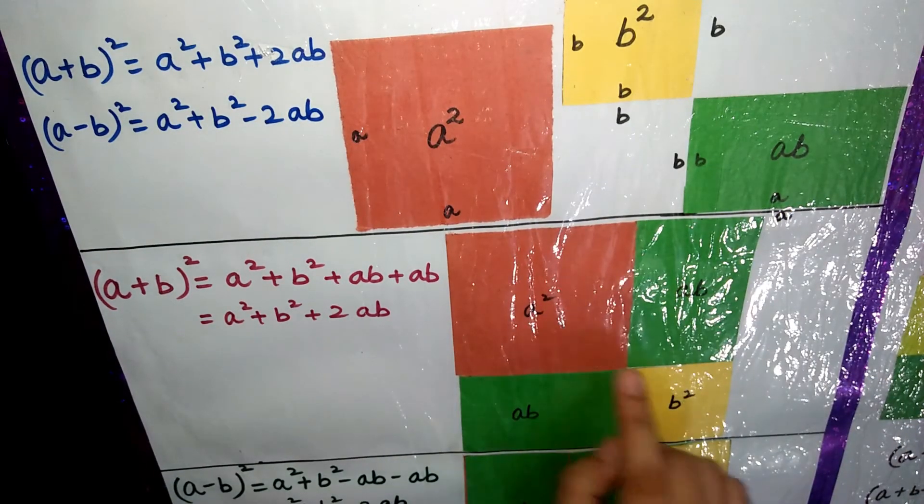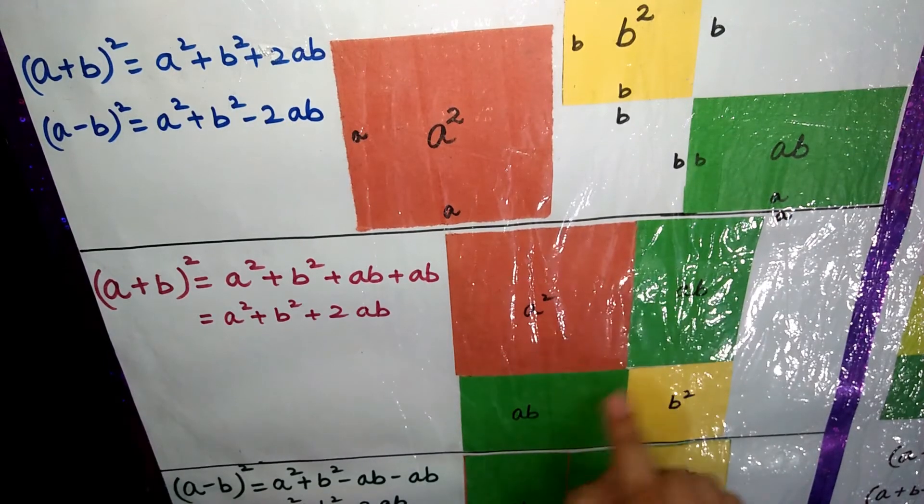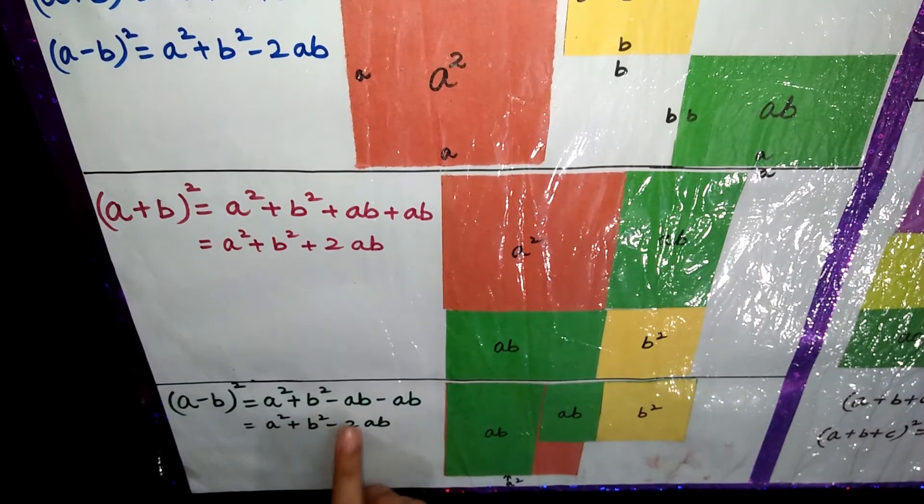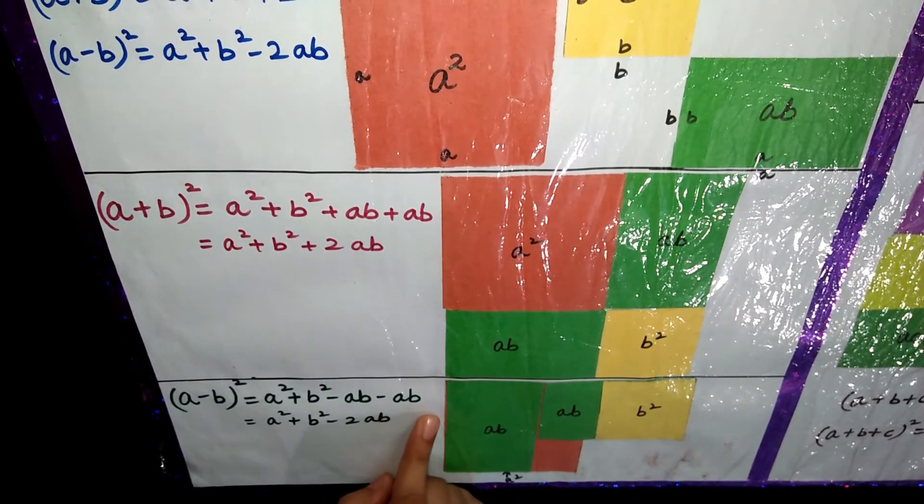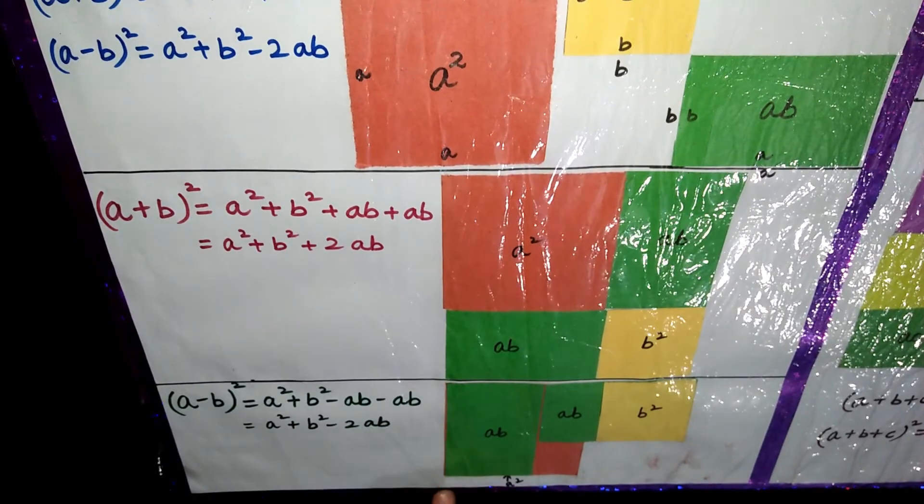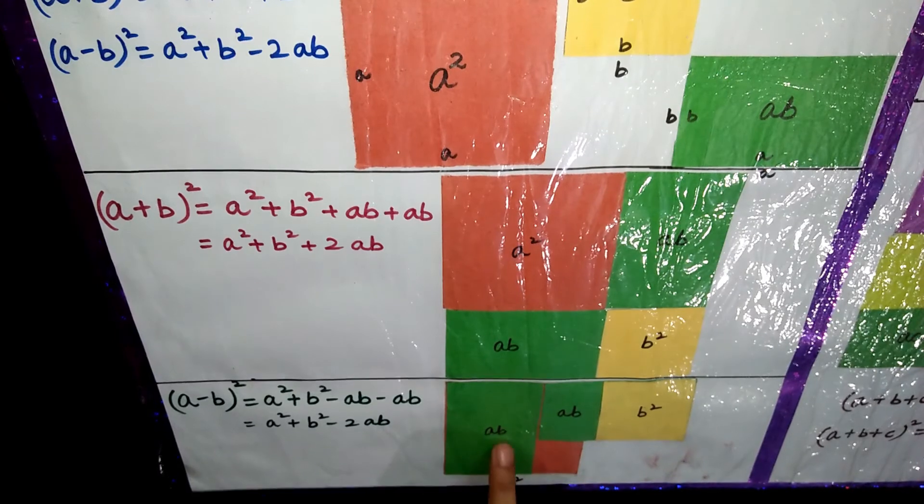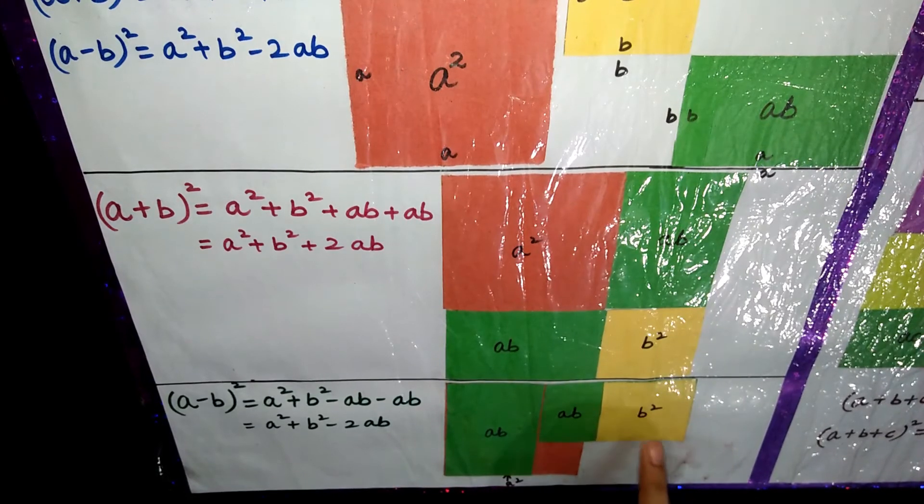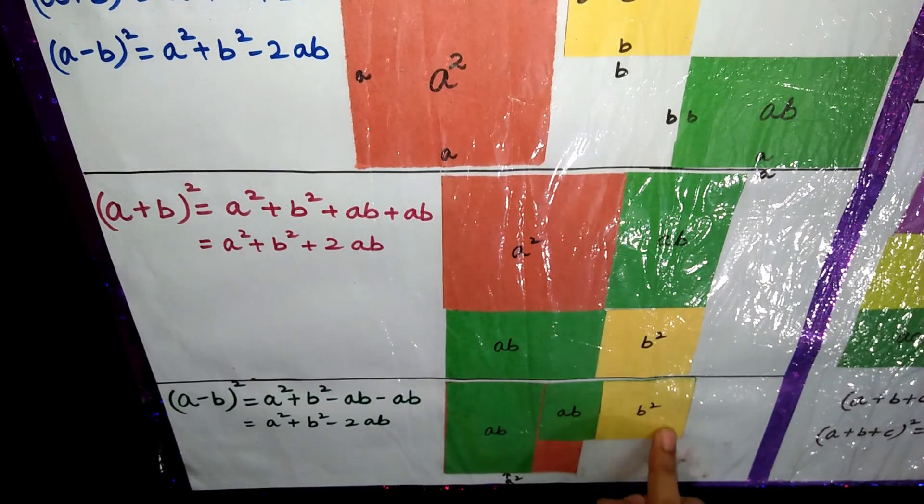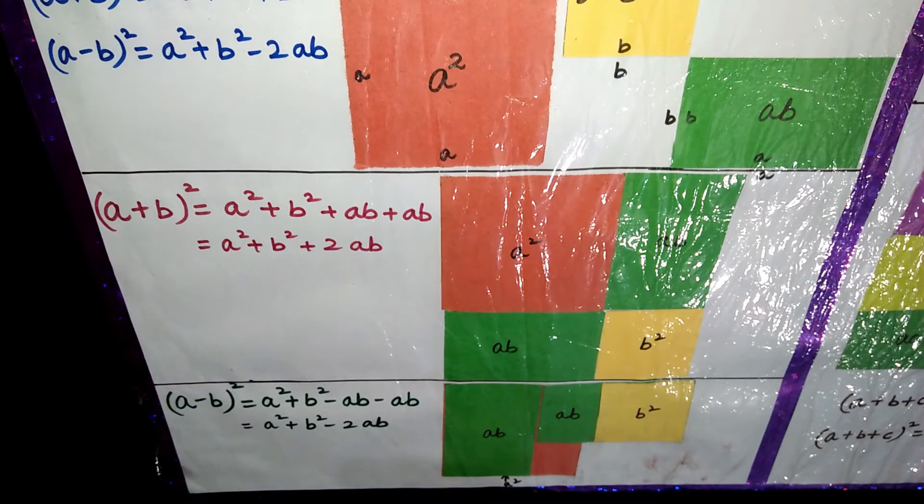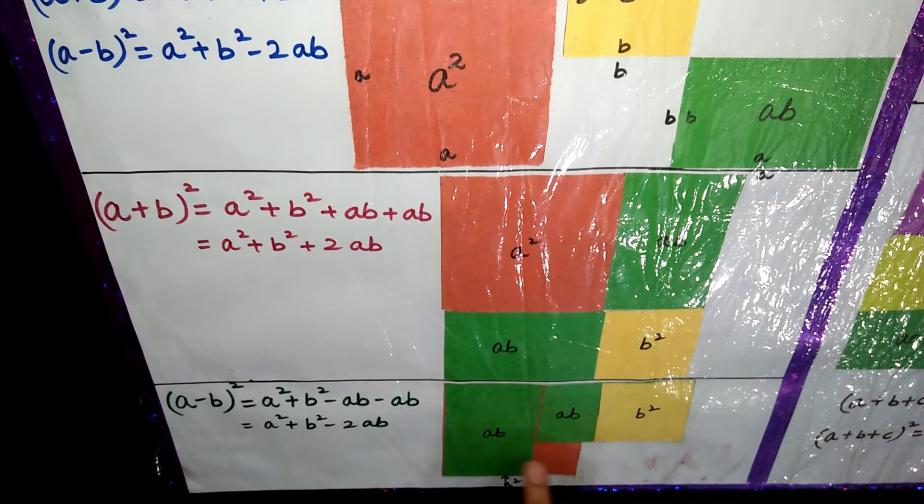So this is a square plus b square plus 2ab. Now second identity is a minus b whole square equals to a square plus b square minus 2ab. Take a square, subtract ab from a square and rest which is left added with b square. Subtract ab from a square and b square, so what is left is the identity a minus b whole square.